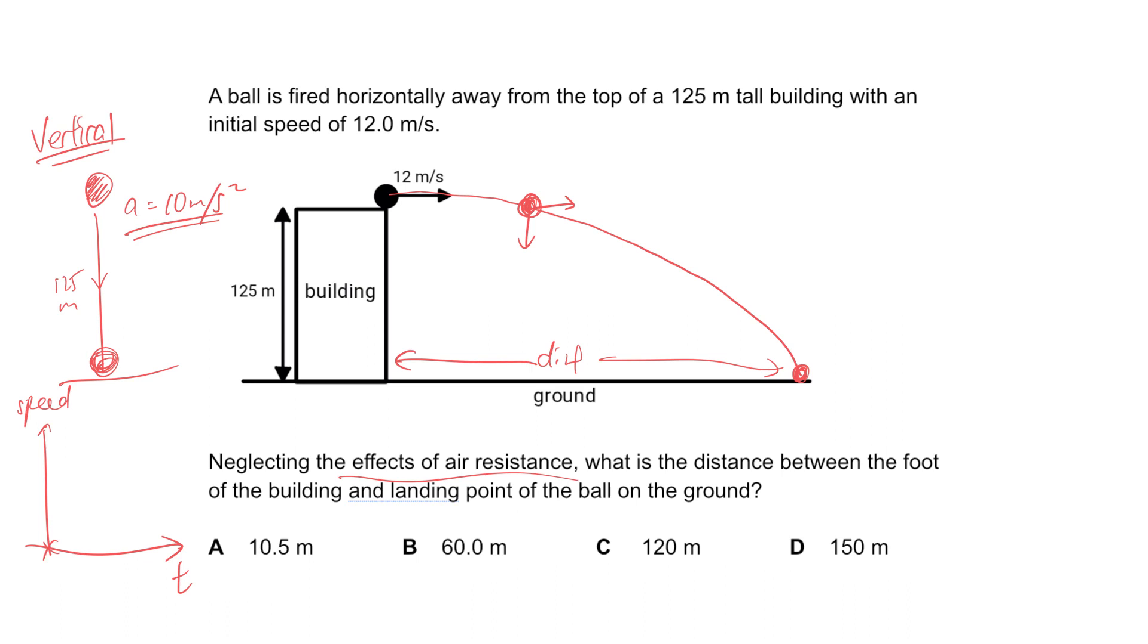It will start from speed zero and will be a straight line with constant gradient of 10 meters per second squared, and you reach the floor at unknown time t.